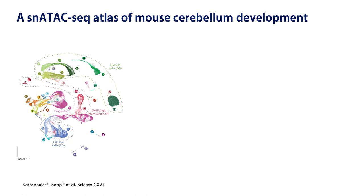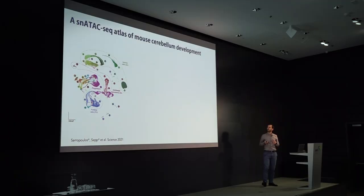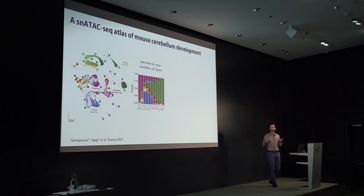Every dot in this plot represents a single cell, and cells with similar chromatin accessibility profiles are grouped together into clusters. We can then link these clusters to cell types and states using gene scores — aggregating the accessibility around a gene as a proxy for its expression — and compare to known marker genes from databases and literature. Using this approach, we were able to identify all the major cell types in the cerebellum.